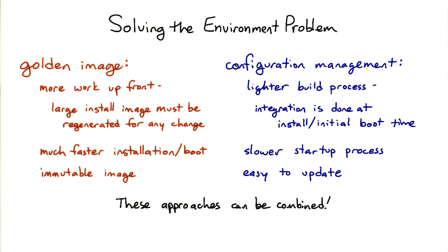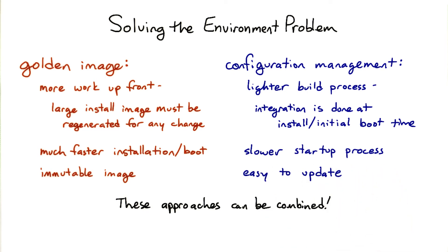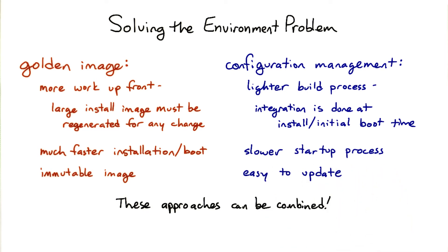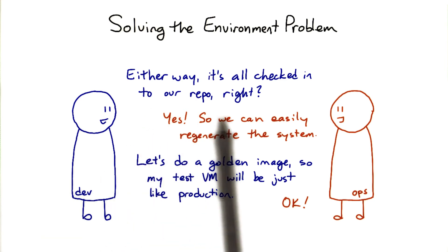And of course, you can have something in between. For instance, install the base software and libraries, perform the main configuration, create a golden image, and then use it to bring up the machines. Then once they're up, use the configuration management system to perform smaller rolling updates. If both the image creation and configuration management processes are automated and in a version control system, it's easy to reproduce these steps.